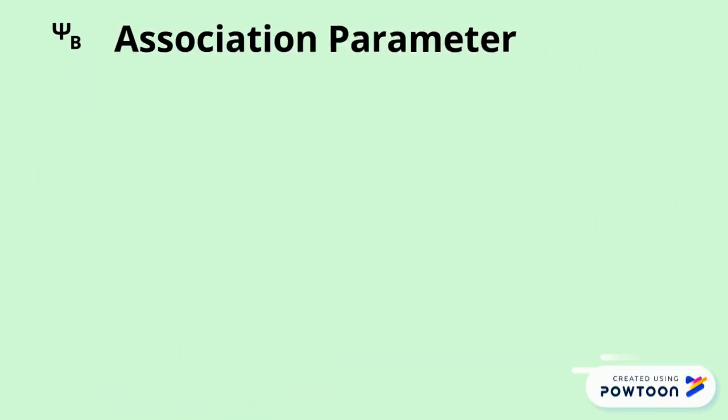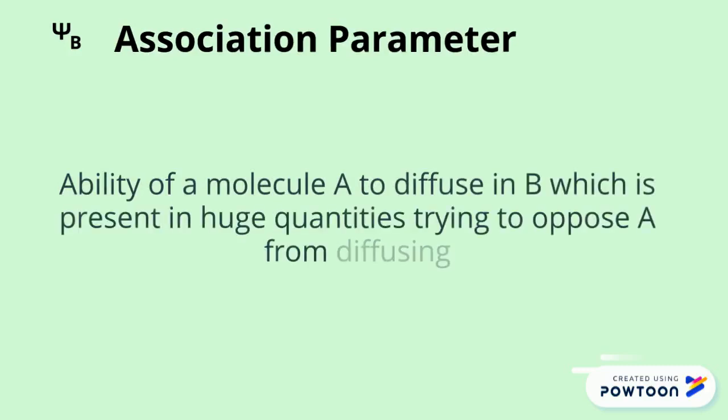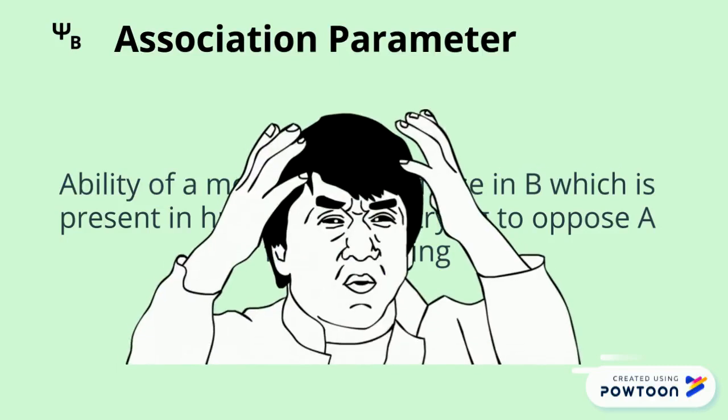The Greek letter psi here denotes the association parameter. The association parameter is defined as the ability of a molecule A to diffuse into B which is present in huge quantities trying to oppose A from diffusing. Complicated, isn't it?